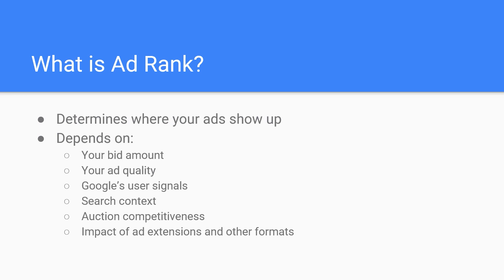There's also the context of the search that you need to consider. Two different people could actually search the same keyword and have completely different contexts. Google is going to know that and keep it in mind when evaluating your ad rank, which can vary pretty wildly depending on related but similar searches.